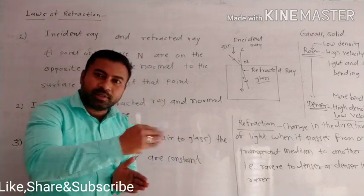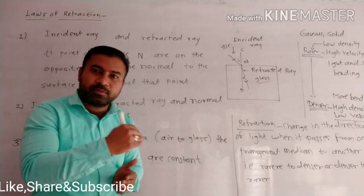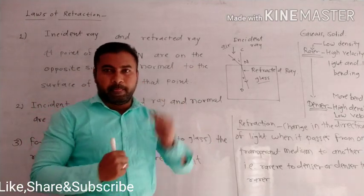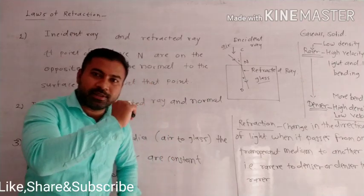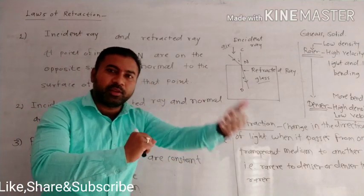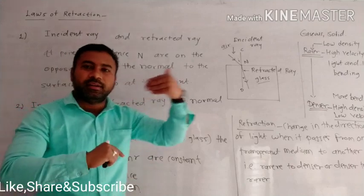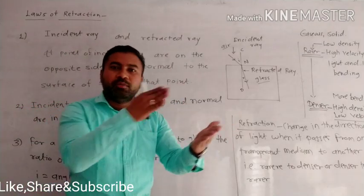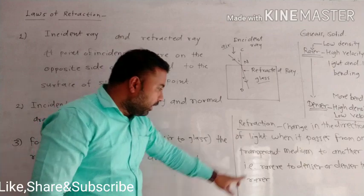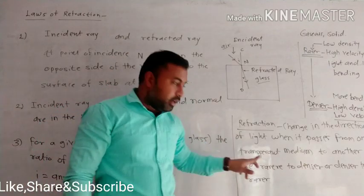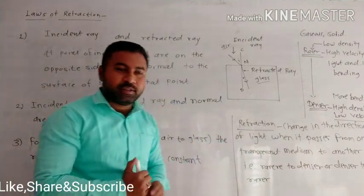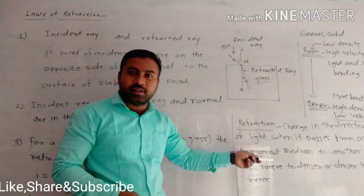The difference is that light passes from one rarer medium to a denser medium, and from denser to rarer. So what is a rarer medium and what is a denser medium?